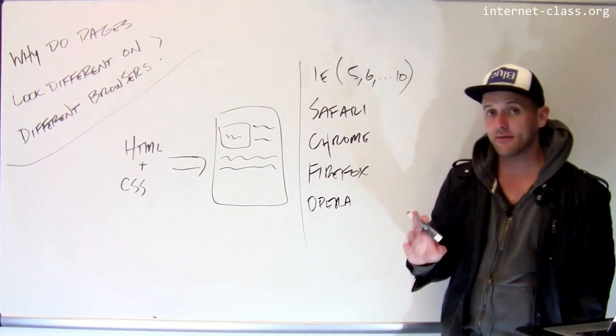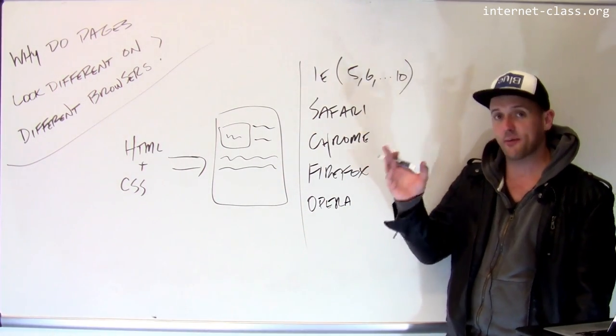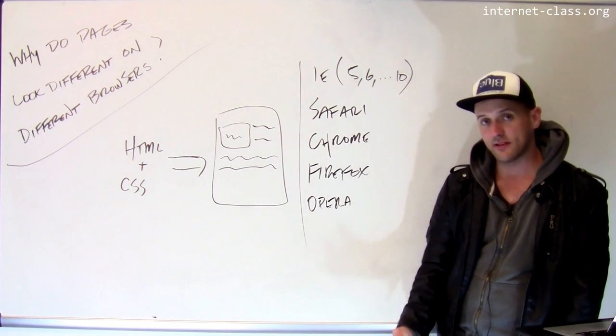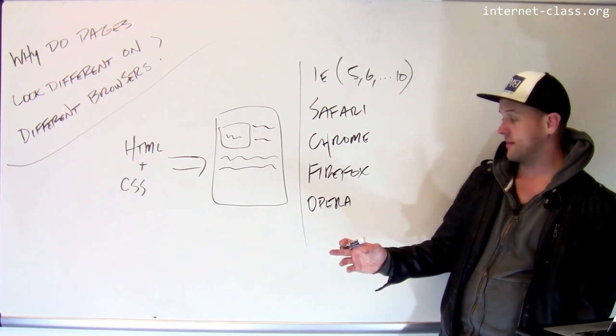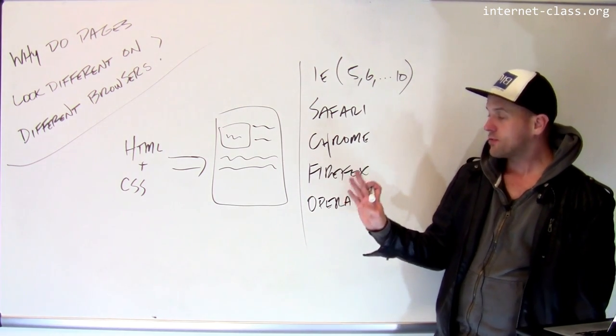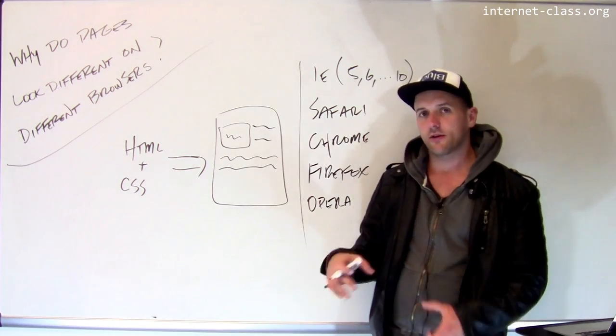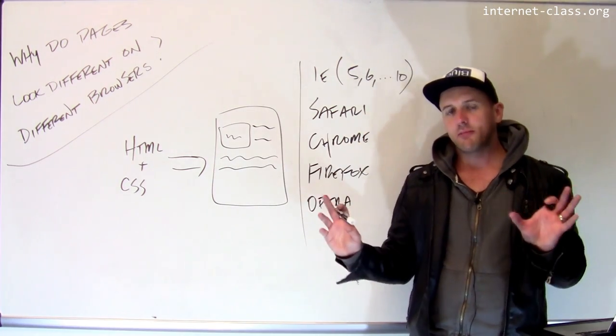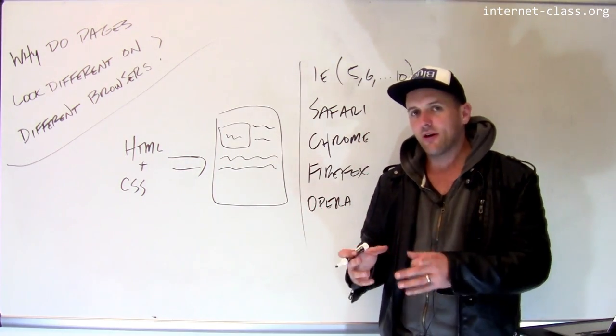For a long time, these browsers are separate projects, separate pieces of software, designed by different people, developed and tested by different people. And particularly early on in the early days of the web, the HTML standard was still being developed, still being fleshed out. So there were these ambiguities.